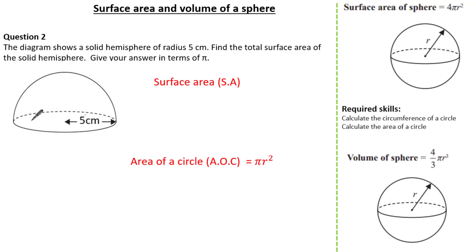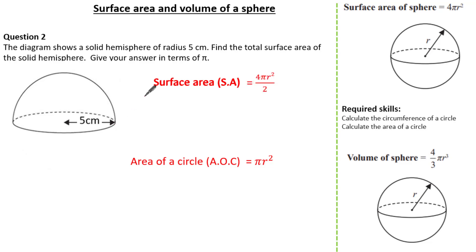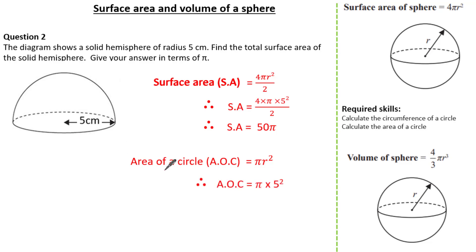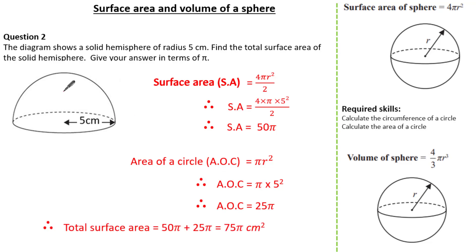Starting with the curved surface area: for a full sphere it would be 4 pi r squared, but since it is a hemisphere we divide by 2. Substituting r = 5, the curved surface area is 50 pi. For the circular base with r = 5, the area is 25 pi. Therefore the total surface area is 50 pi + 25 pi = 75 pi cm squared.